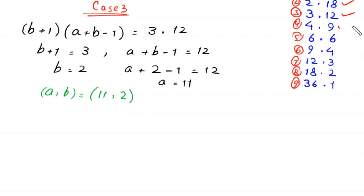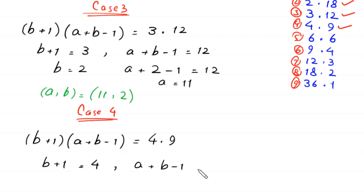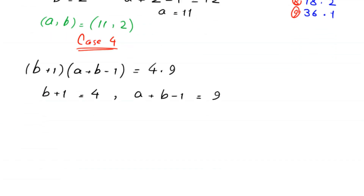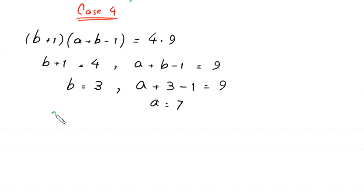In case 4, we set (b plus 1)(a plus b minus 1) equal to 4 times 9. So b plus 1 equals 4 and a plus b minus 1 equals 9. From here b equals 3, and substituting: a plus 3 minus 1 equals 9, so a equals 7. Fourth pair of solutions: (a, b) = (7, 3).